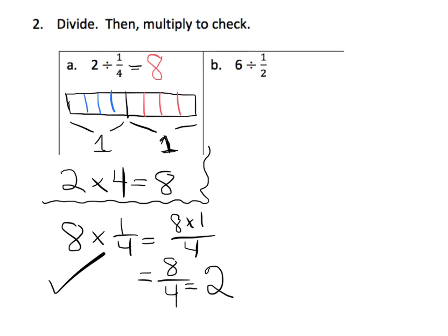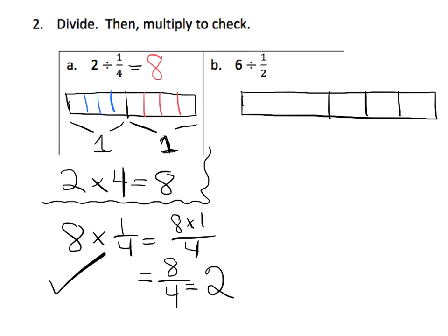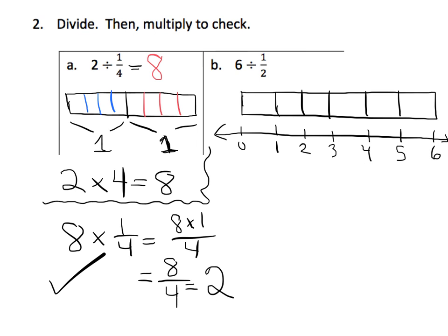So now let's do 6 divided by 1 half. I'll draw a tape diagram — it doesn't say we have to, but I'll draw it. First, we're going to draw 6 wholes. And here's our number line to represent the tape diagram as well. We're wondering how many halves are in 6 wholes. Well, you can see that in one whole there are 2 halves, in another whole there are 2 halves, and so on through each whole — drawing it in both the tape diagram and on the number line.